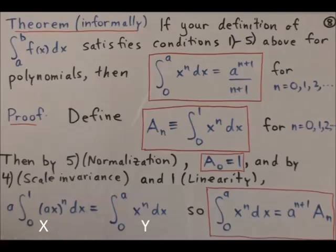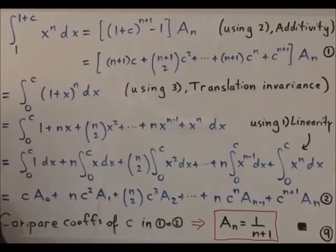Using the linearity property, we can rewrite integral y as a to the n plus 1 capital A sub n. Using this and the additivity property, we write the quantity of 1 plus c to the n plus 1 minus 1 times A sub n. Then expand using the binomial theorem. Rewrite the integral by shifting it and then expanding it with the binomial theorem once again.